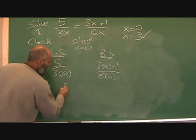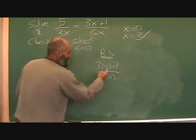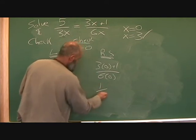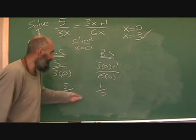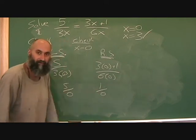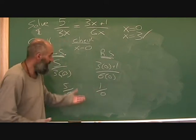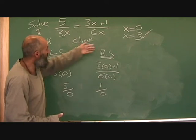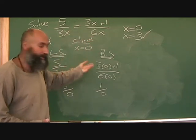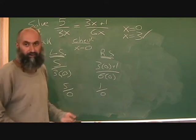Now this is going to be five over zero. This is going to be three times zero is zero plus one is one over zero. Now does five over zero equal to one over zero? We don't know because we can't divide by zero. In our equation, we already know x is equal to three works. But for this equation, we don't know what happens when x is equal to zero.